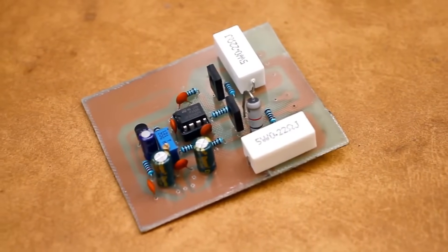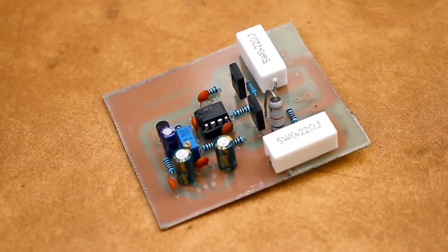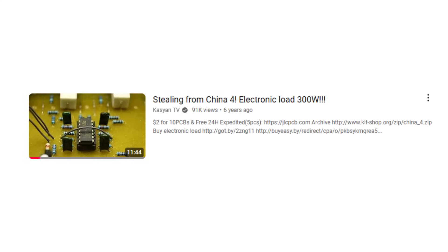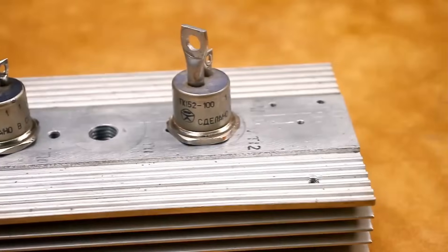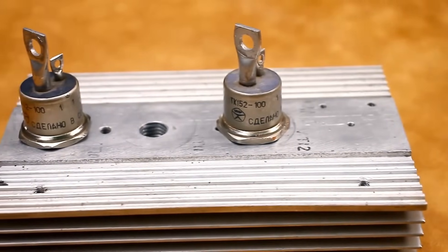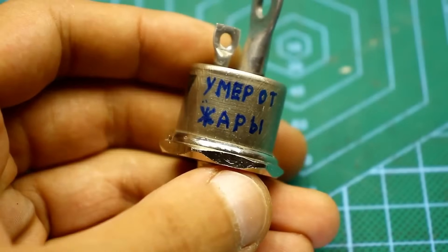Such powerful things belong in an electronic load. To be fair, I have already made an electronic load in the fourth episode of Stealing from the Chinese, but that load was on modern field effect transistors. I think you'll be interested to see what these Soviet dinosaurs are capable of, so I started this project.